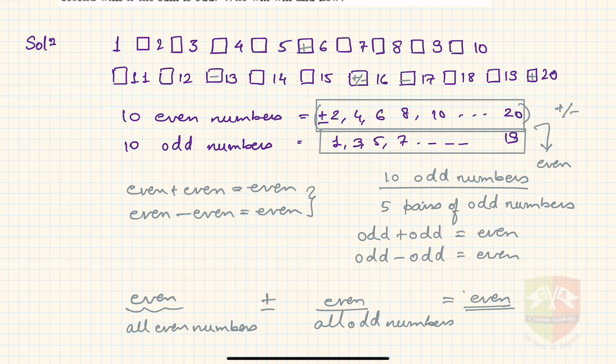Why? Again, sum or differences of 10 even numbers will always result in an even number. Similarly, sum and differences of 10 odd numbers, or 5 pairs of odd numbers, will always result in an even number. So even plus minus even is even, isn't it?